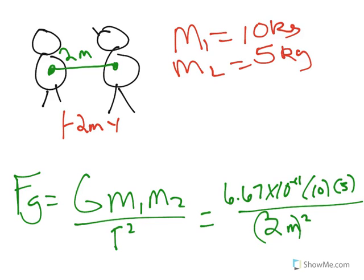So we plug all this in the calculator. It is kind of tricky to plug in the calculator. So 6.67 second E, negative 11, times 10, times 5, divided by 2 squared. And we should get that there is a force of gravitational attraction between these two babies of 8.3 times 10 to the negative 10th newtons.